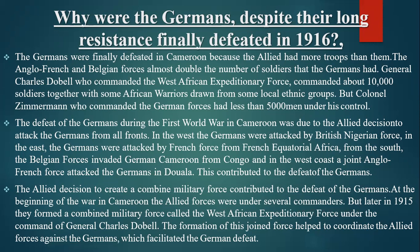The defeat of the Germans was also due to the Allied decision to attack from all fronts. In the west, the Germans were attacked by British-Nigerian forces. In the east, the Germans were attacked by French forces from French Equatorial Africa. From the south, Belgian forces invaded German Cameroon from Congo. On the west coast, a joint Anglo-French force attacked the Germans in Douala. This multi-front strategy contributed significantly to the defeat of the Germans.